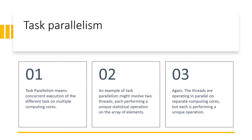Next is task parallelism, which is very important. Task parallelism means concurrent execution of different tasks on multiple computing cores. Unlike data parallelism where we discussed the same task, here we are discussing concurrent execution of different tasks across multiple computing cores.